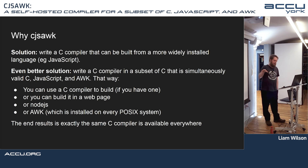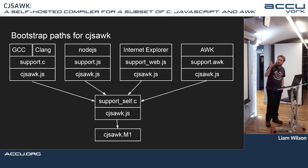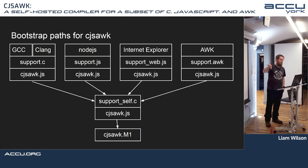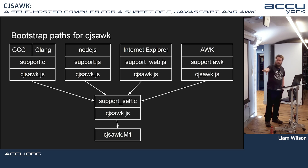The end result is you're able to get exactly the same C compiler installed on every system. What I set up was essentially several different bootstrap paths you can run — one of which is in Explorer. For each platform, there's a bit of support code to run the compiler, and then you use the compiler to rebuild a self-hosted version, which emits the cjs.m1 file — a macro assembly output file.